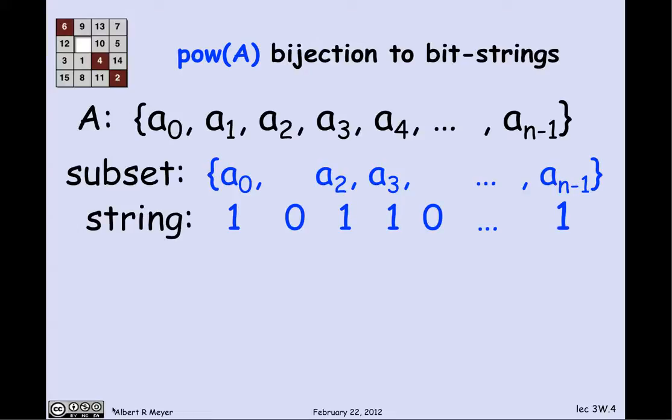I can take that subset and have it correspond to a bit string, where I put a 1 where the element is in the subset and a 0 where it is not. So there's a 1 because A₀ is in the subset, a 0 because A₁ is not, two 1's because A₂ and A₃ are in the subset, a 0 because A₄ is not, and so on, ending with a 1 because A_(n-1) is in the subset. The k-th bit in the string is 1 if and only if A_k is in the set.